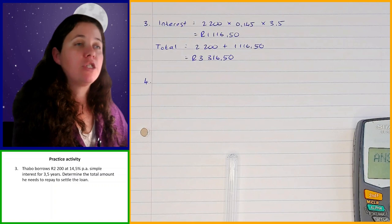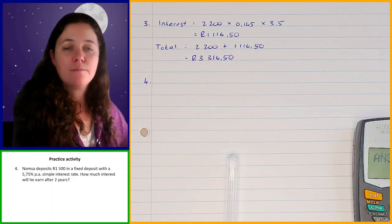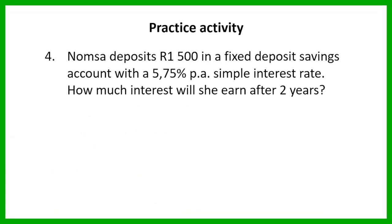And then the last question, question four. Normsa deposits 1,500 rand in a fixed deposit savings account with a 5.75% per annum simple interest rate. How much interest will she earn after two years? I'm going to give you one minute to work on this.